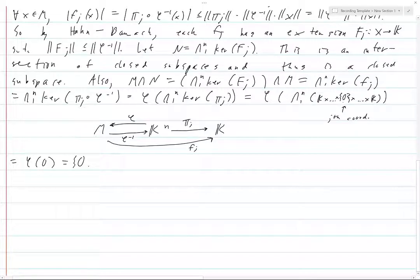And what's that? That's 0. So this is the 0 set. And so intersection of M with N is 0.